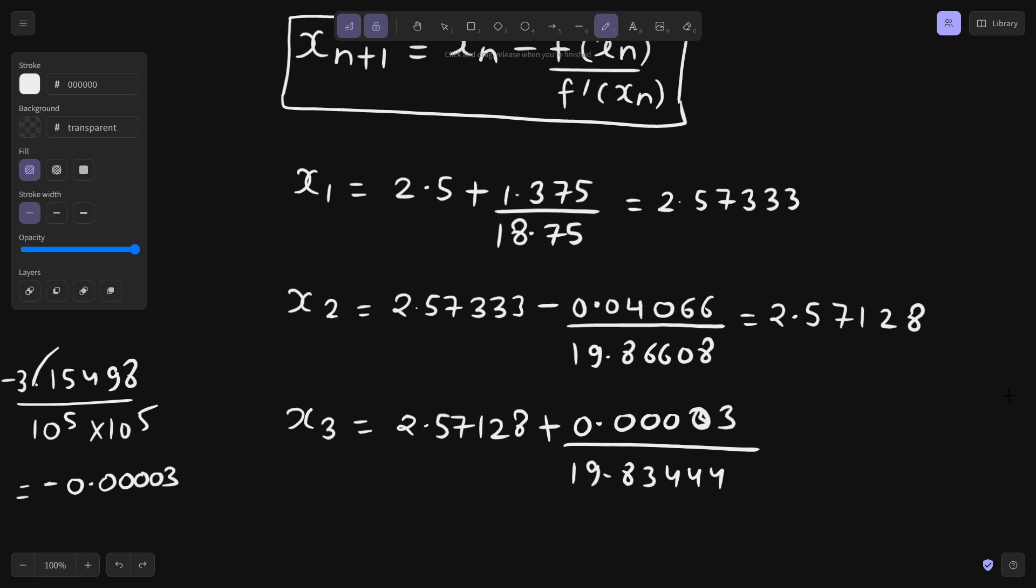Let's check the collective value. 2.57128 plus 0.00003 divided by 19.83444. So the value which I am getting is 2.57128. I am only writing till 5 decimal places because 4 matching was required. Although it is matching till 5 decimal places, I have only written till 5 and it is matching till 5. Although we needed only till 4 which is there.